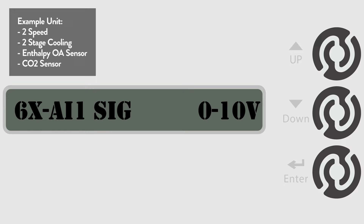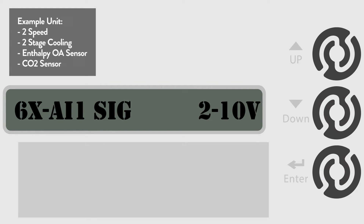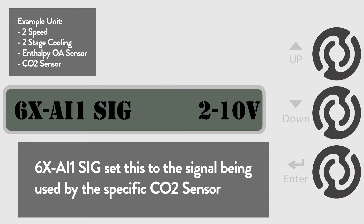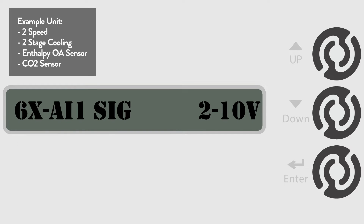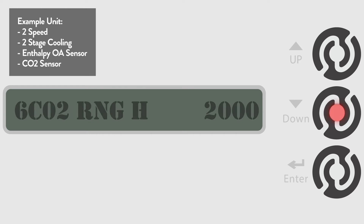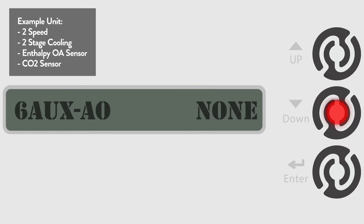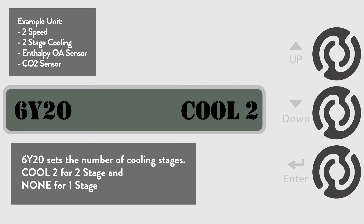Now scroll to the 6 AUX AI1 SIG menu to set what type of signal is sent to the CO2 sensor. The default is 0 to 10 volts, but for this example we are going to change it to 2 to 10 volts. Now let's go to 6Y20, which sets the number of cooling compressors. The default is COOL2 for two compressors. If your unit only has one compressor, change this setting to none. For this example we will leave it at two cooling stages.